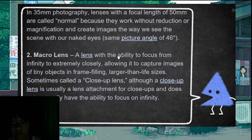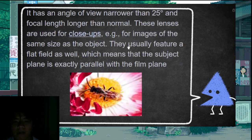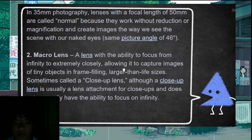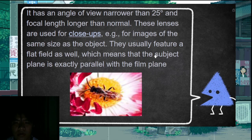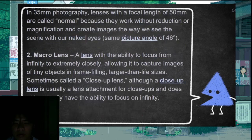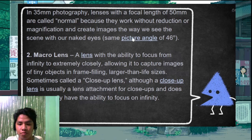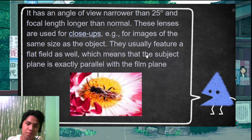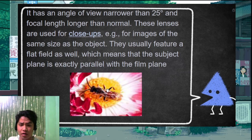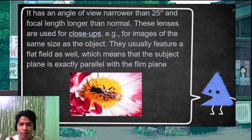The macro lens, sometimes called the close-up lens, is used to capture very small subjects — like a bee on a pollinating plant. Macro lenses have a higher focal length of 50mm and above, but a narrower angle of view — less than 45 degrees.